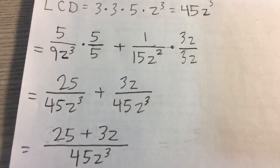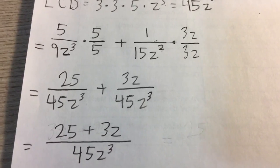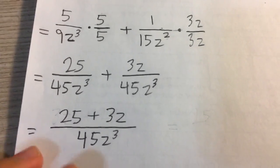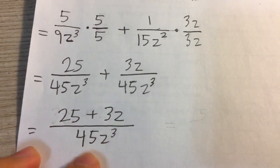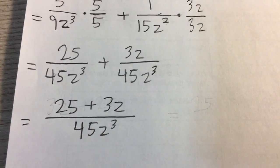When they have the same denominator we can simply add the numerators together. We have 25 plus 3z over 45z cubed, and that's our final answer.